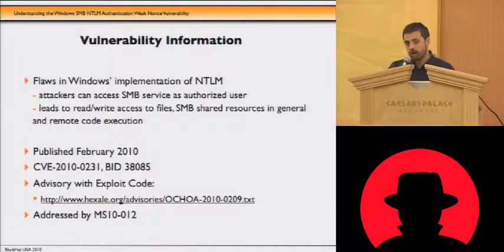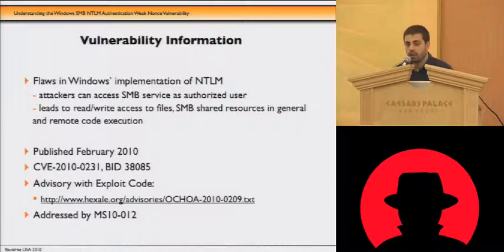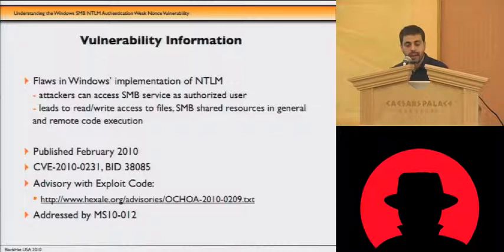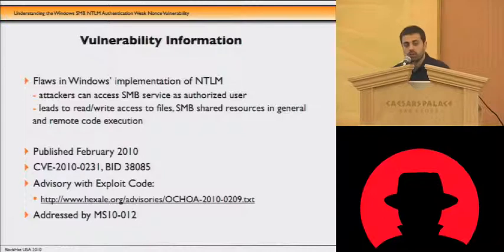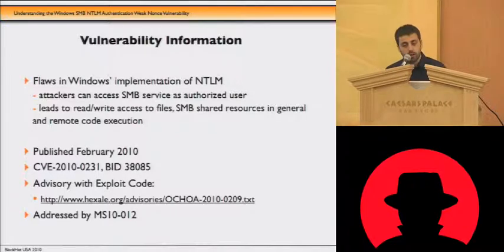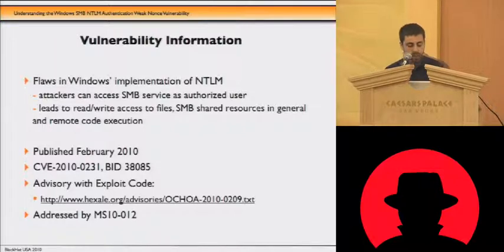This vulnerability is not just one vulnerability but consists of a series of flaws in the way Windows implemented the NTLM authentication protocol. An attacker that can exploit these flaws can access the SMB service without any credentials, gain access to files and any resource shared using SMB, and also execute code remotely using DCE RPC over SMB. We published this vulnerability at the beginning of this year along with an advisory, and there is already a patch available.